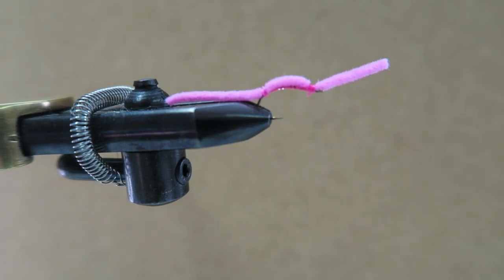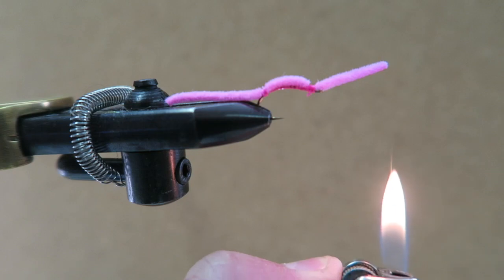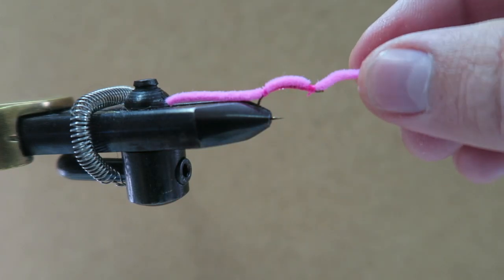There's one more step to do and that's you got to burn the ends just enough to make them taper. I just take a lighter, light it underneath and I just kind of slowly lift it up until I see it start to taper like that.